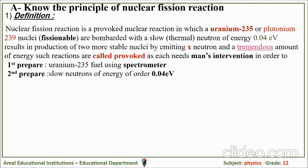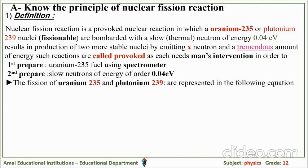That results in the production of two more stable nuclei by emitting prompt neutrons and a tremendous amount of energy. Such reactions are called provoked, since they need man's intervention: first, to prepare uranium-235 or plutonium-239 fuel using a spectrometer; and second, to prepare slow neutrons of energy of the order 0.04 electron volts. The fission of uranium-235 and plutonium-239 are represented in the following equations.